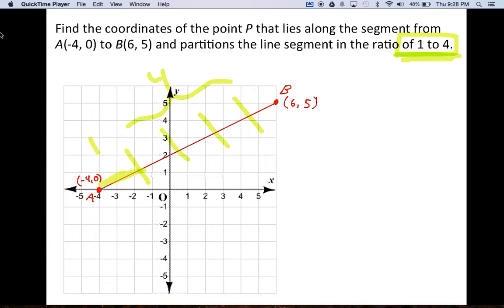It means we want to split it up so that there's one part on one side of our point. So let's say this was our point. There's one part on one side of that point and four parts on the other part. Okay, to do that, now if you noticed,